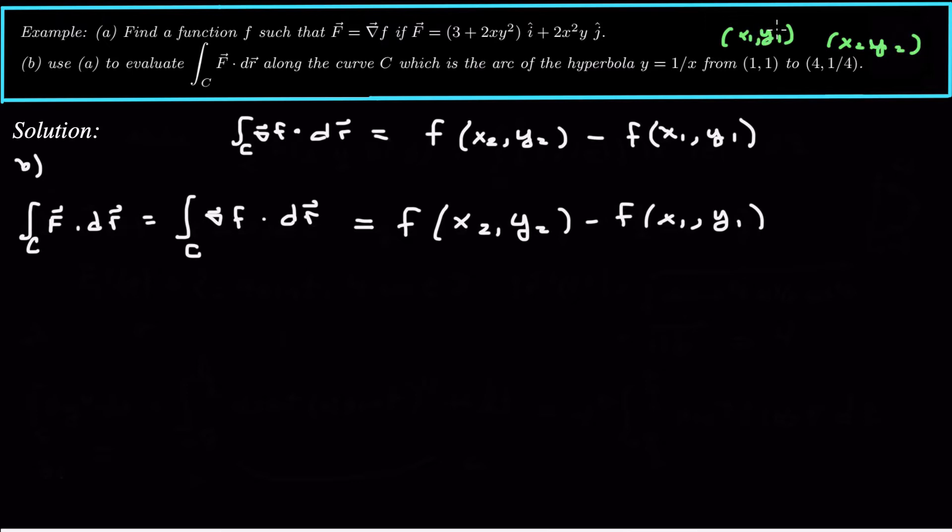Now, it doesn't matter that I travel along the part of the hyperbola. So the hyperbola, you know, looks something like that. It doesn't matter which path I take. I can take the hyperbola. I can take the straight line. I can take some other crazy path to get there. It doesn't matter because it's path independent whenever your field is conservative. So all I care about is this point 1, 1 and this point 4, 1 quarter.